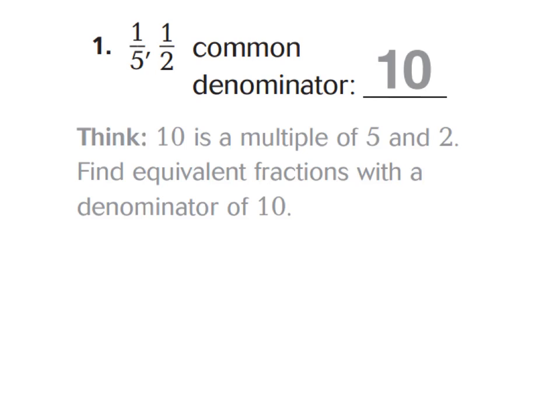Let's look at this first example. We have the fractions 1 fifth and 1 half. Notice how our denominators are not the same. Our goal is to find a common denominator so that you can set yourself up to do addition or subtraction later on. If you think about your multiples of 5 and your multiples of 2, you will eventually hit the number 10, which is the same number for a denominator. We call that a common denominator, because common means alike.